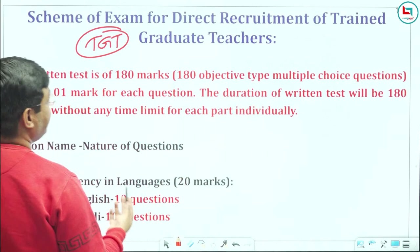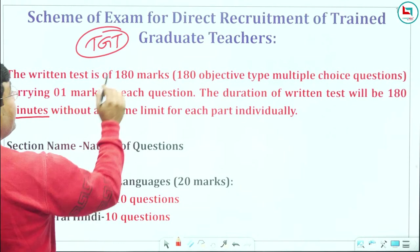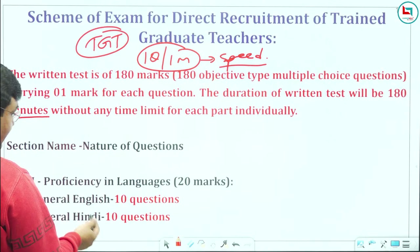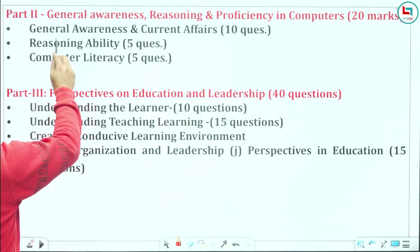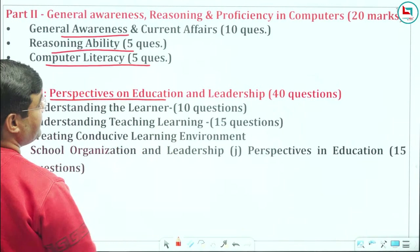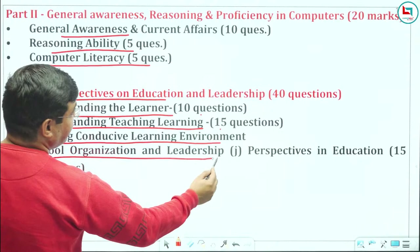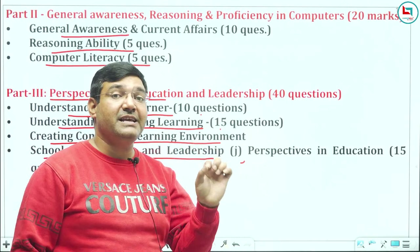The TGT paper will be 180 minutes, 180 questions — one question, one minute. English 10 marks, General Awareness, Reasoning, Computer 5 questions each. Perspective — Understanding the Learners 10 questions, Understanding Teaching-Learning 15 questions. Conducive Learning Environment, School Organization, Leadership, Perspective in Education — 5 marks. It is very clear how many marks are in each particular segment.